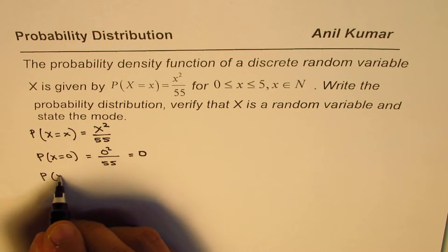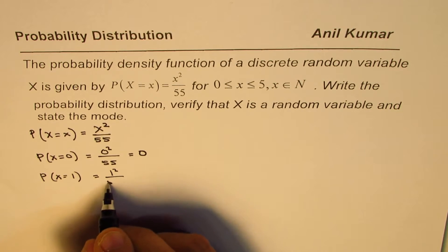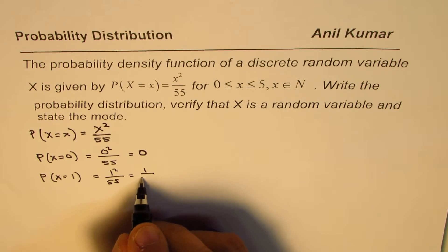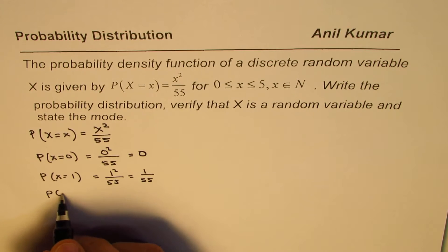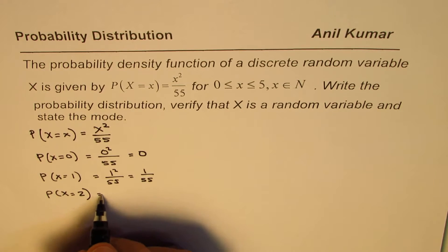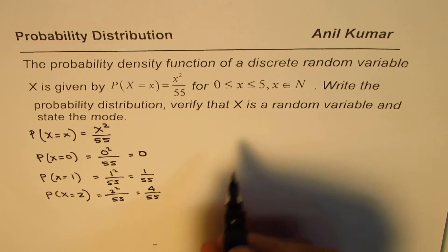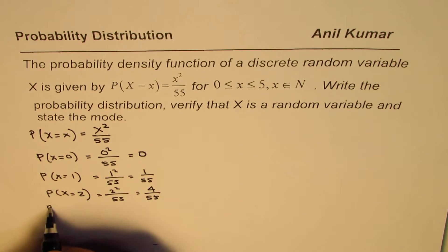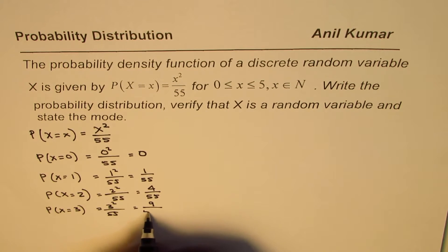When x equals 1, it is 1²/55, so it is 1/55. The probability for x equals 2 is 2²/55, and that is 4/55. For 3, it will be 3²/55, that is 9/55.